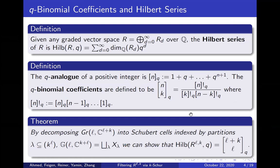Before introducing the Reiner-Tudose conjecture, we make some necessary definitions. First, we define Hilbert series: given a graded vector space R over Q written as a direct sum of graded pieces R_d, the Hilbert series of R is the power series in q where the coefficient of q^d is the dimension of the d-th graded piece.